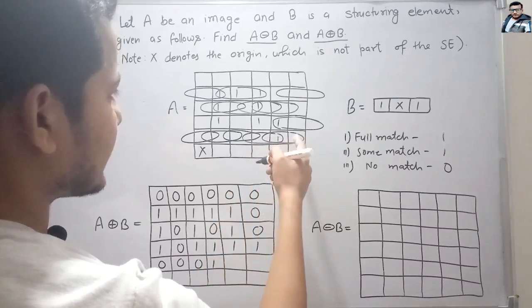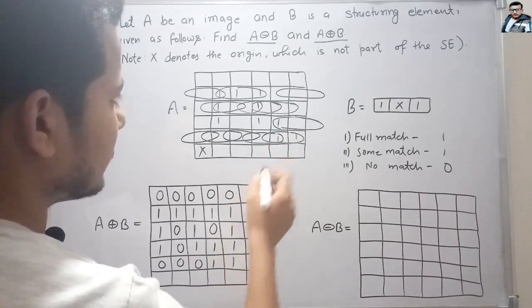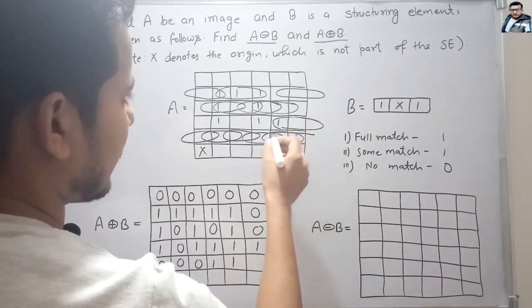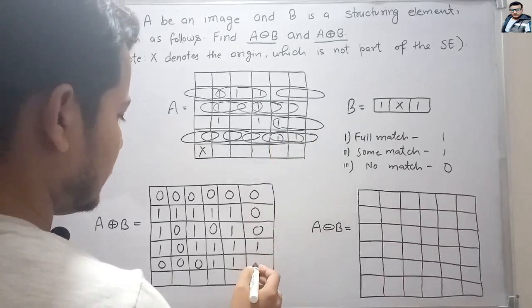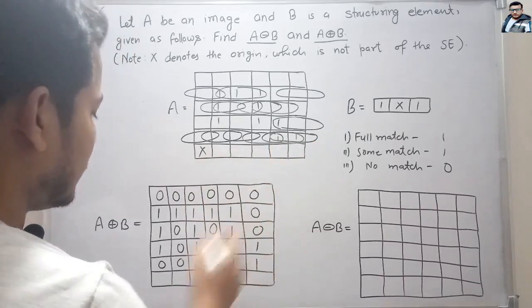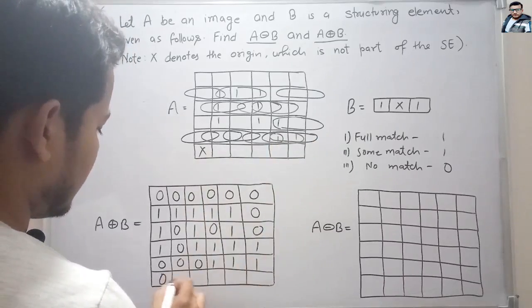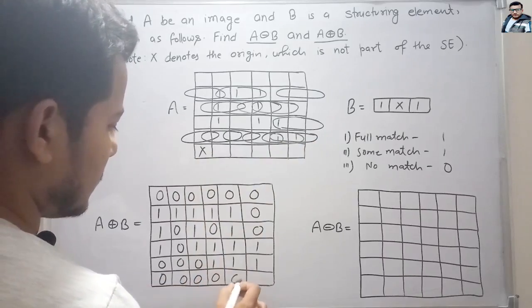Here matching: 1, so 1. And here also matching: 1. And here no matching, so all are 0.